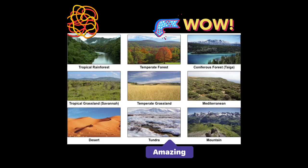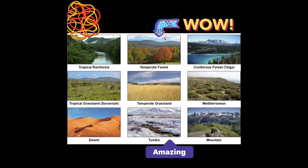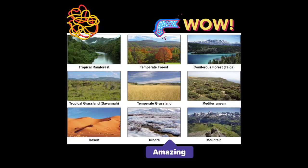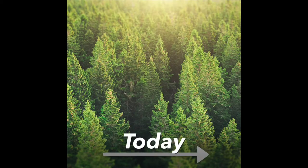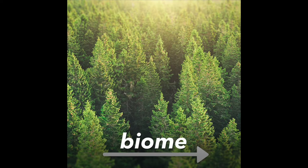Some examples include savannah, grasslands, succulent karoo, Namakaroo, desert, forest, fynbos, freshwater wetlands, sea biomes and much more. Today we are mainly focusing on a forest biome.